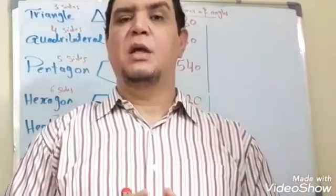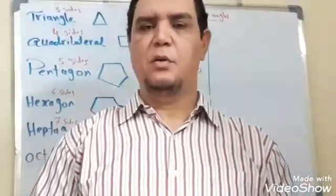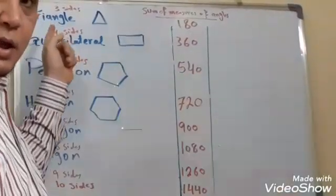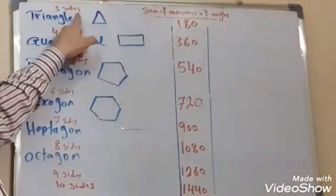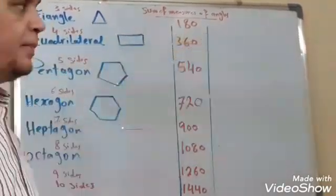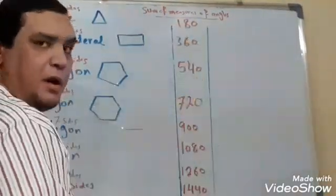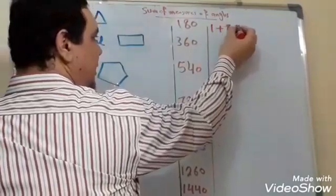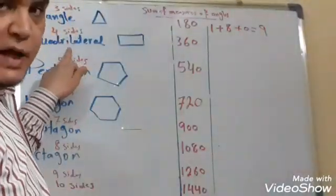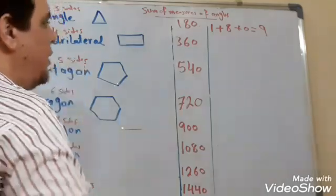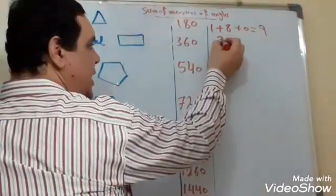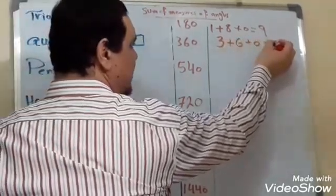The second secret of the number nine involves the measures of angles of polygons. A triangle, which has three sides, has interior angles summing to 180. If we add all digits: 1 plus 8 plus 0 equals nine. A quadrilateral, which has four sides, has all angles summing to 360. If we add all digits: 3 plus 6 plus 0 equals also nine.